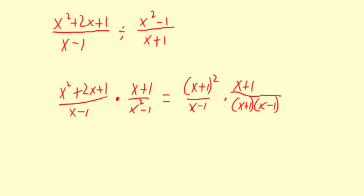Okay, so multiplying these, you're going to get x plus 1 quantity squared times another x plus 1 divided by x minus 1 quantity squared. And the x minus 1 quantity squared is multiplying these two together.